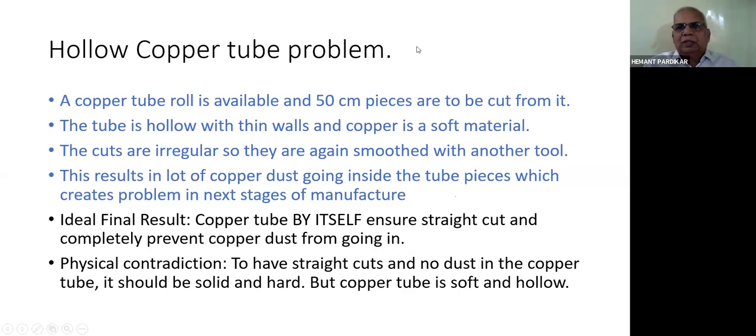This was a problem given to me in level 2. A copper tube roll around 100 meters is available and 50 centimeter pieces are to be cut from it. The tube is hollow with thin walls and copper is a soft material. The cuts are irregular, so they are again smoothed with another tool. The result is a lot of copper dust going inside the tube pieces which creates problems at the next stage. There's another three stage manual process to remove this copper dust, still the result is not satisfactory and there were lot of rejections. The ideal final result is: copper tube by itself ensures straight cut and completely prevents copper dust from going inside.